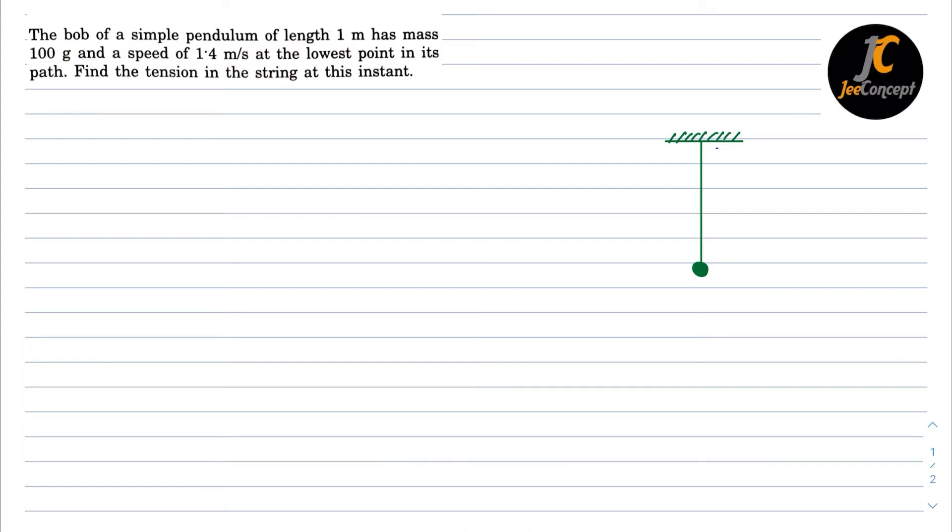So let's say this is the bob having a mass m and it is at its lowest point. The velocity of this bob at this particular instance is given as 1.4 meter per second and the mg force is acting downward.